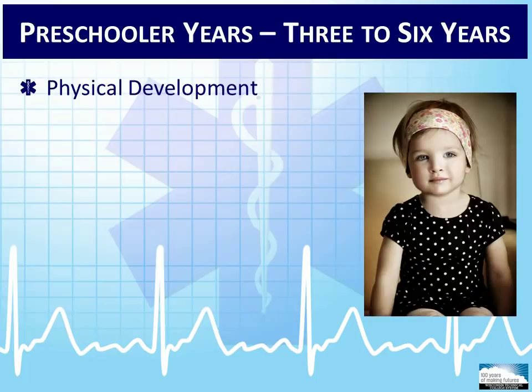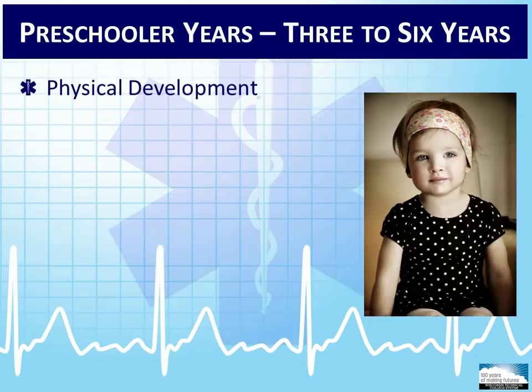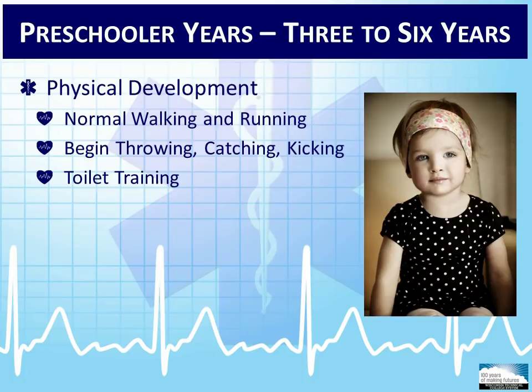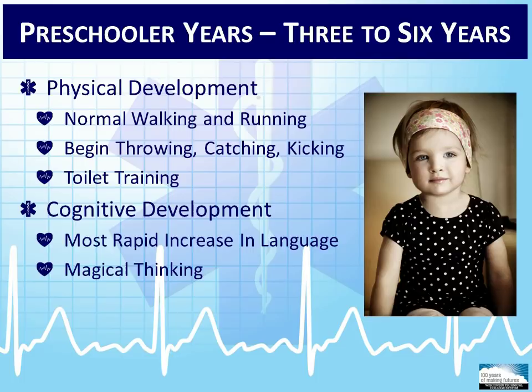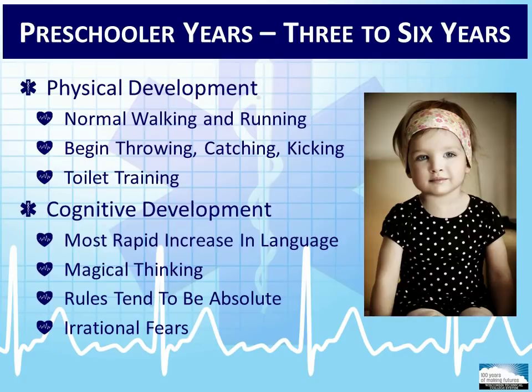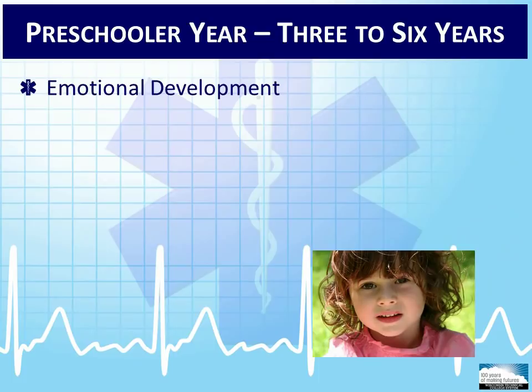During the preschool years, 3 to 6 years old, children tend to become more mobile and active in activities and sports, which increases their exposure to traumatic incidents. Toilet training usually occurs during the early preschool age range. Preschoolers have the most rapid increase in their language during this period and can answer simple questions appropriately. Thinking tends to be of the magical nature and rules tend to be absolute, so some fears for this age group tend to be irrational. The child might be frightened of his or her own injury, especially if it is bloody, because the child might see it as permanent.